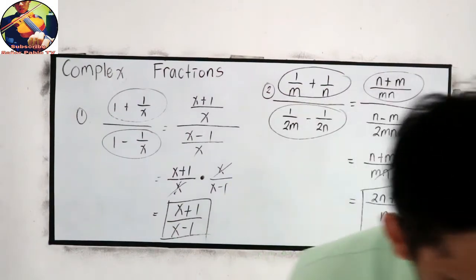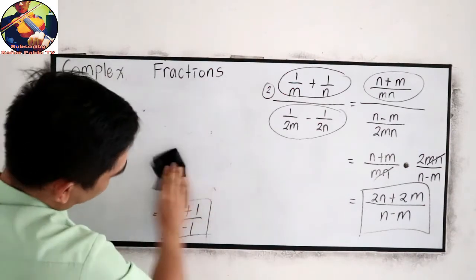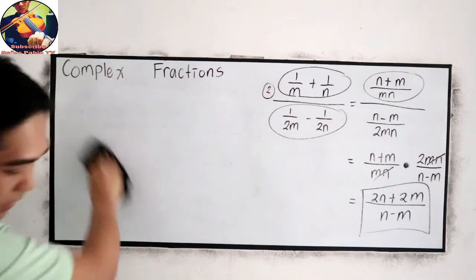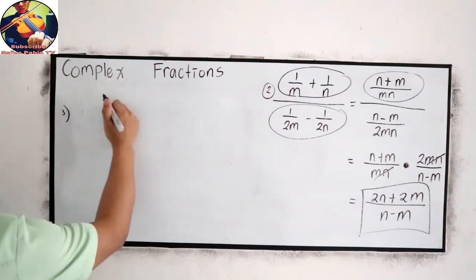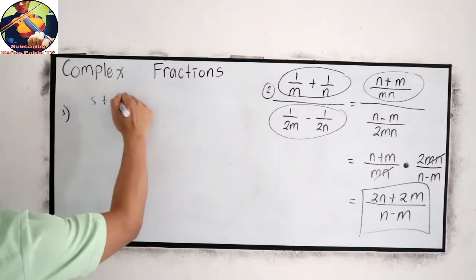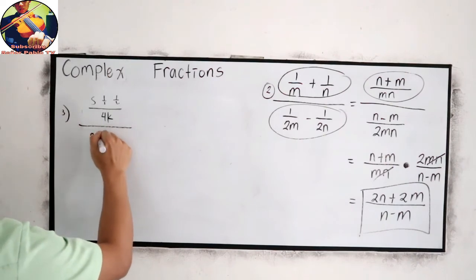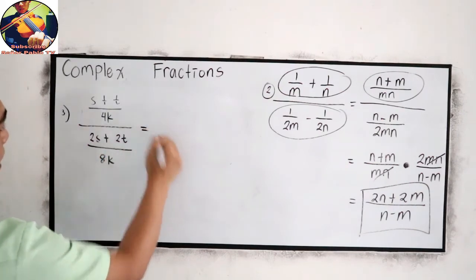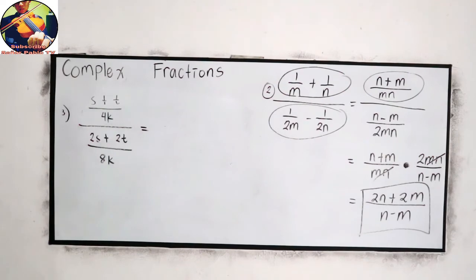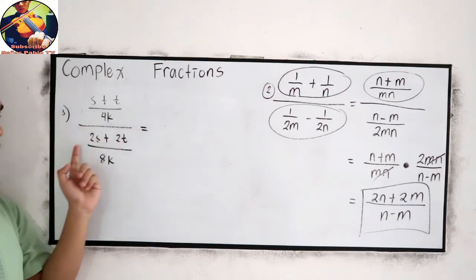Now I want you to try this number, number 3. Number 3, let's try number 3. S plus T over 4K all over 2S plus 2T all over 8K.